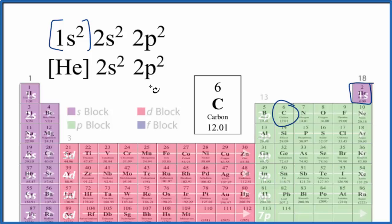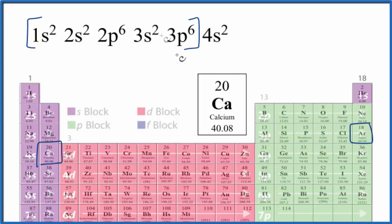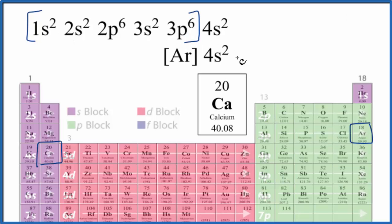Let's try something a little bit longer. Pause and write the condensed electron configuration for calcium. Calcium has atomic number 20 — we go back to argon at 18. We find 18 electrons here, so everything in this section is the electron configuration for argon. We call this our noble gas core, and the rest are our valence electrons. The condensed notation looks like [Ar] 4s2.